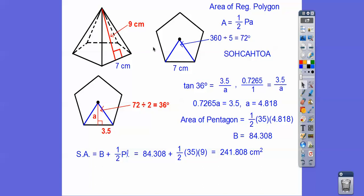So we get the area of this base right here, and the area of a regular polygon is one half the perimeter times the apothem right there. So we need to get this length right here, the apothem, the length from the center to the edge right there.